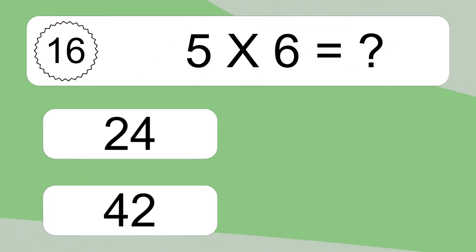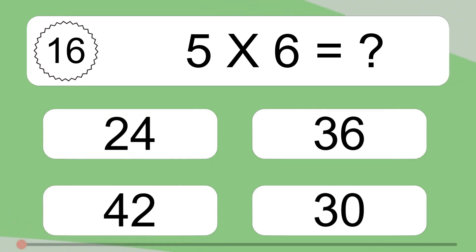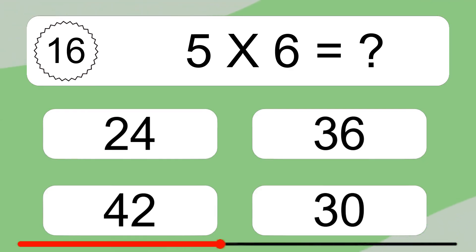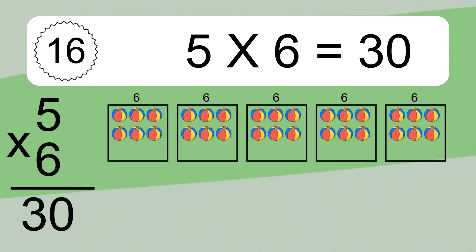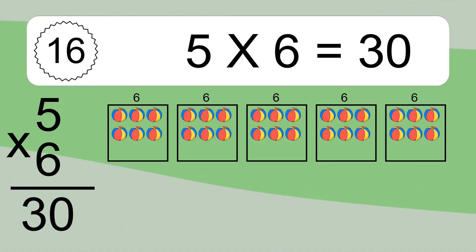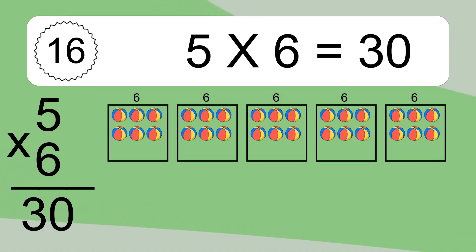5 times 6 equals what? We have 5 boxes, and each box has 6 colorful balls inside. If you count all the balls in all the boxes together, you will have 5 times 6 balls. This equals 30 balls.